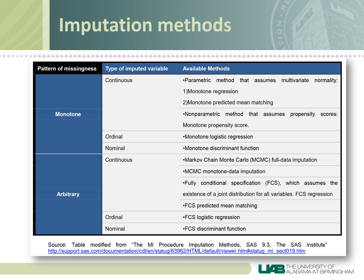This table will help you choose the imputation method based on the type of data you have — whether continuous, ordinal, or nominal — and the pattern of missingness. If you have a monotone missing pattern, you'll use one of those methods; if you have an arbitrary pattern, you can use one of the other methods. If you have questions, I always recommend looking for videos and reading about it, but it may also be best to discuss which method is appropriate with your local statistician.